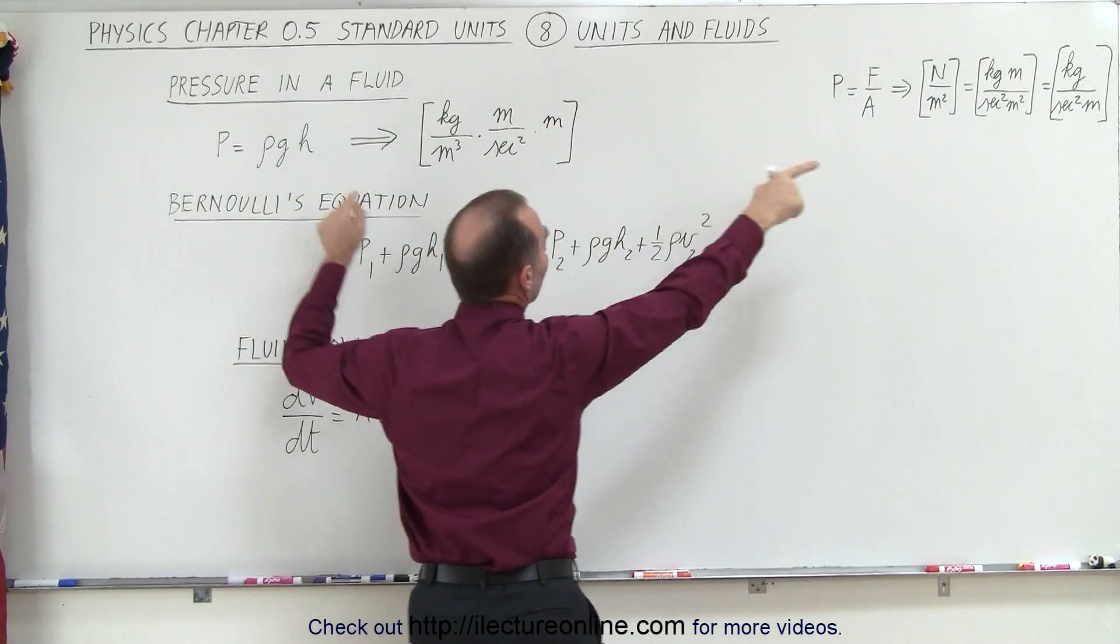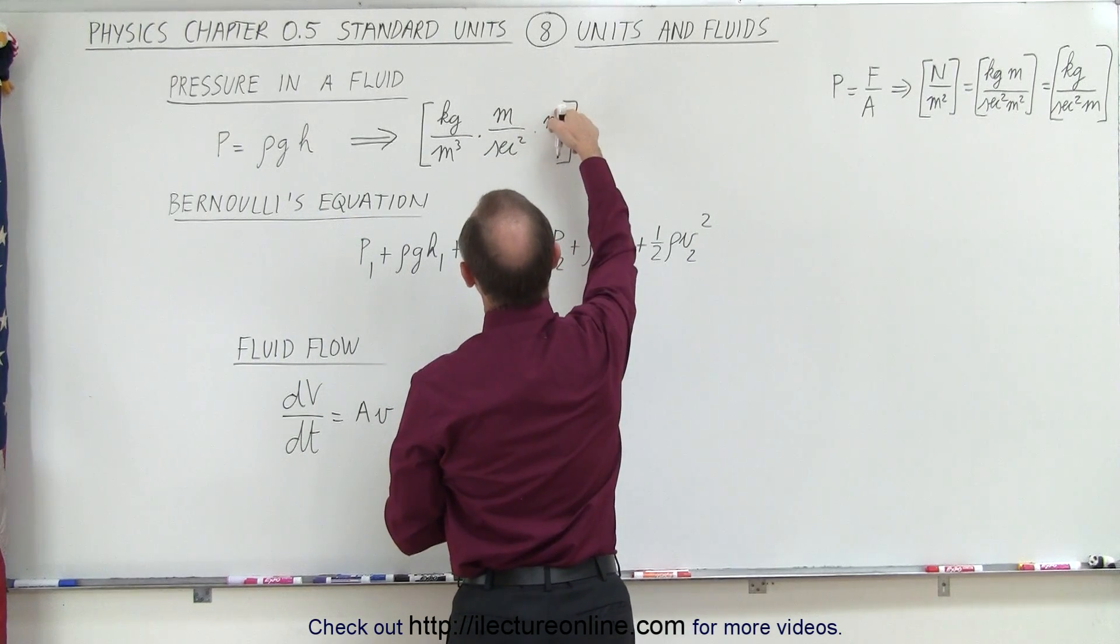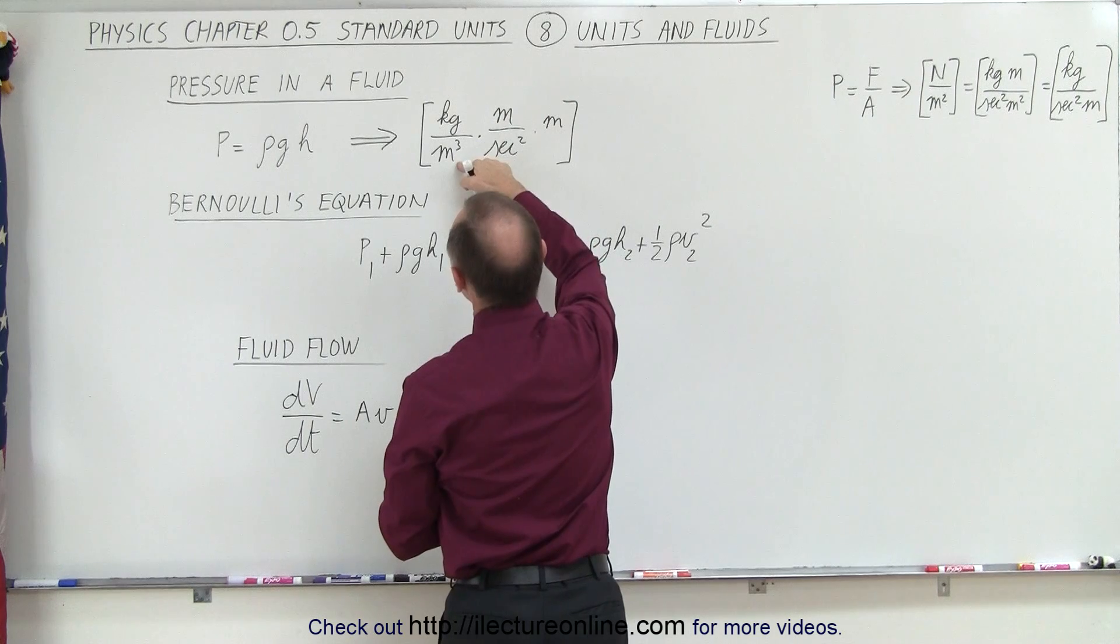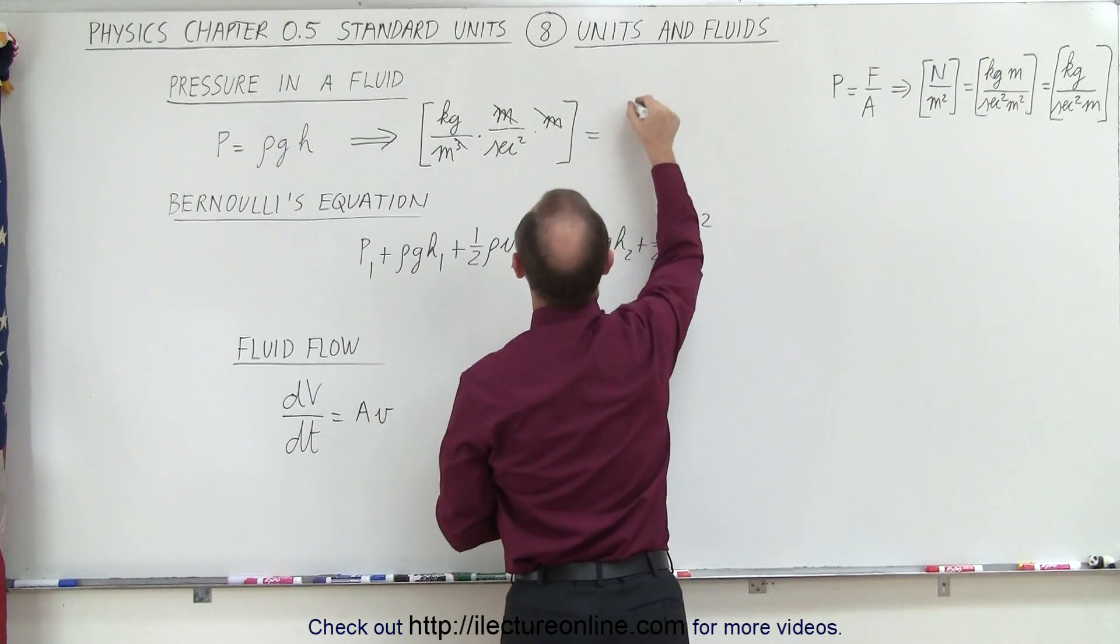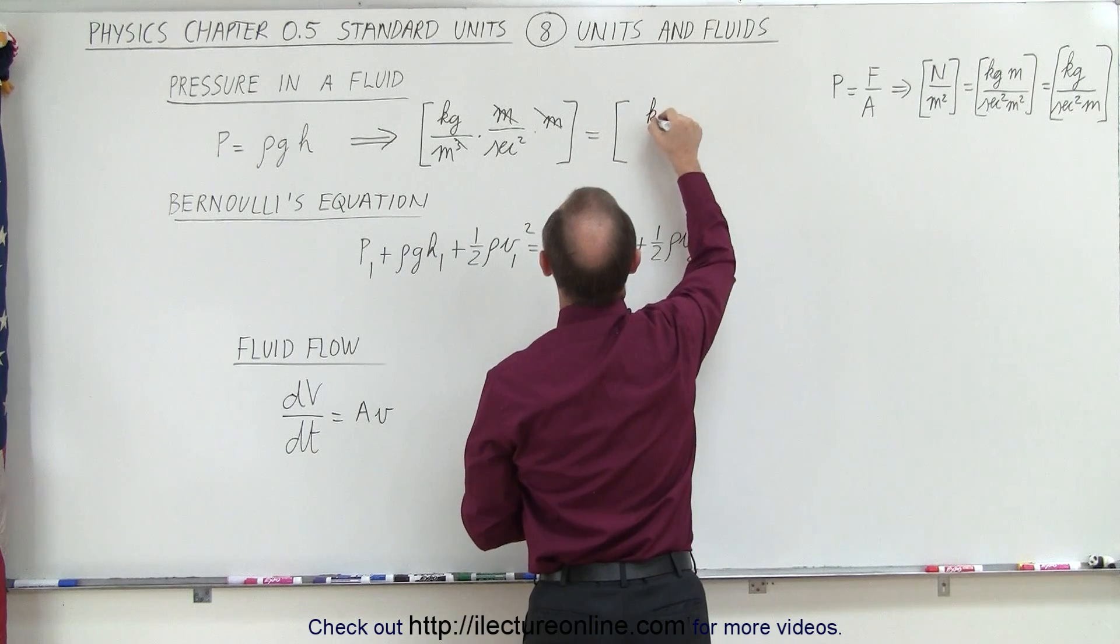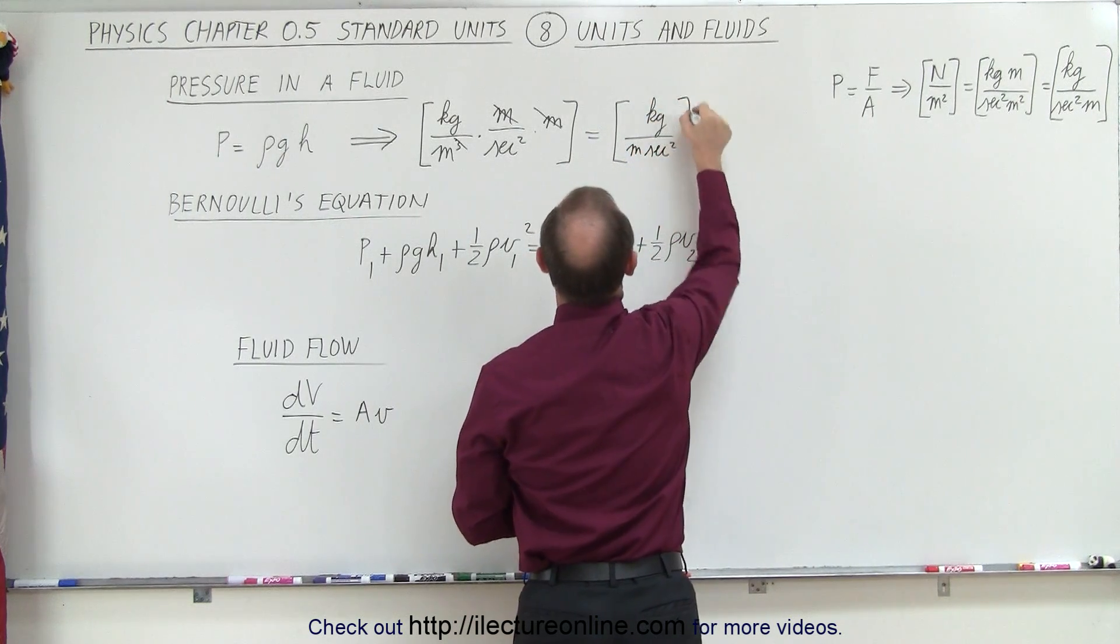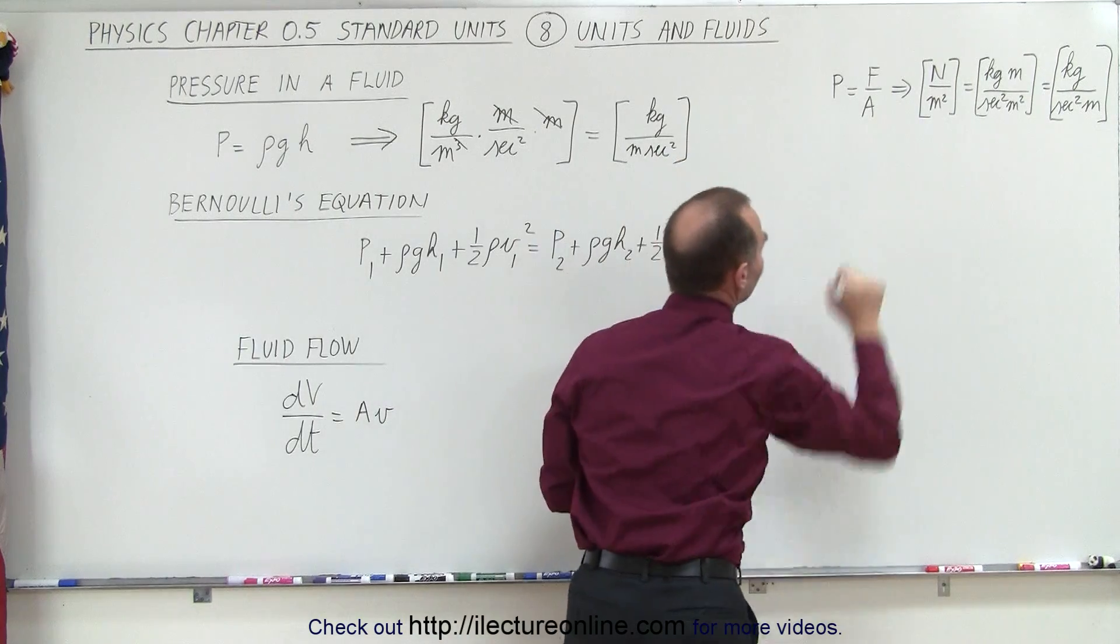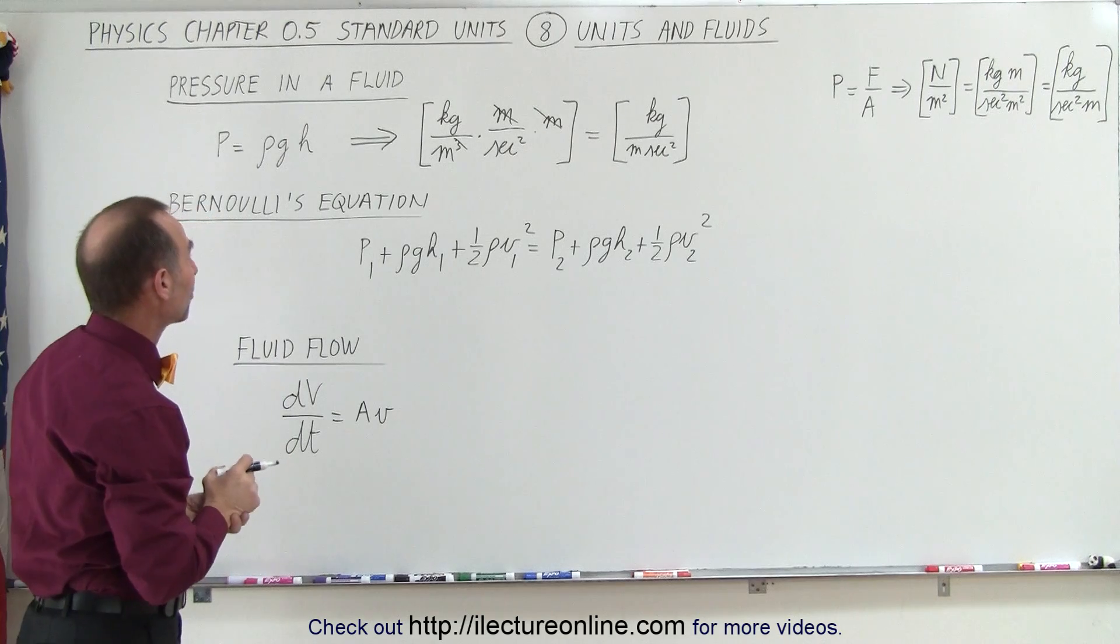Now that should collapse down to what we have over there. Let's see if it does. We have meters times meters in the numerator and meters cubed in the denominator, so these two cancel out two of those, and that then collapses down to kilograms per meters times second squared. And except for the order, it's exactly the same as what we have over there. So you can see those are indeed the units of pressure.